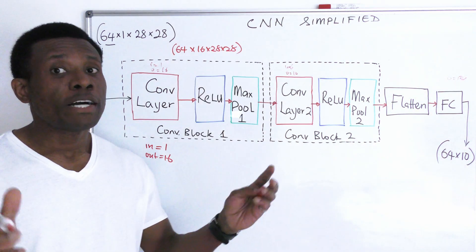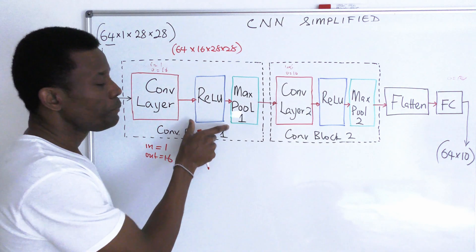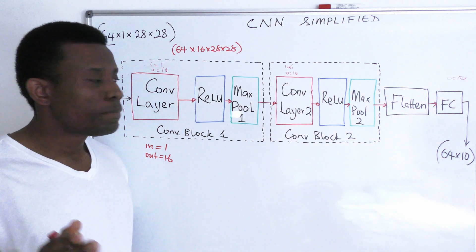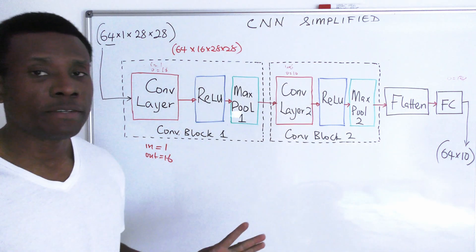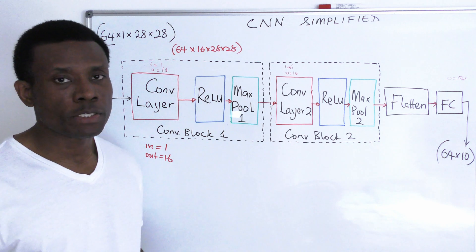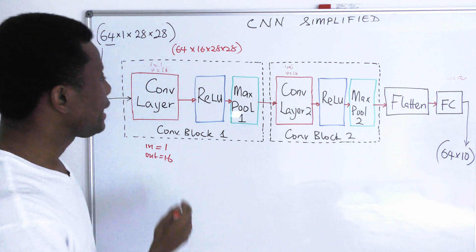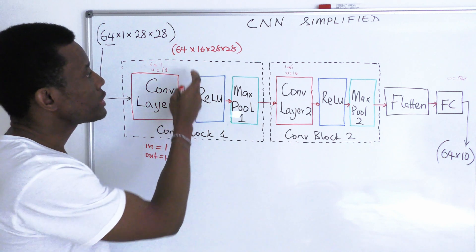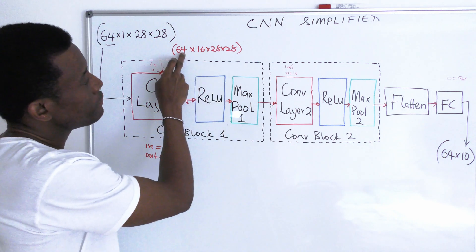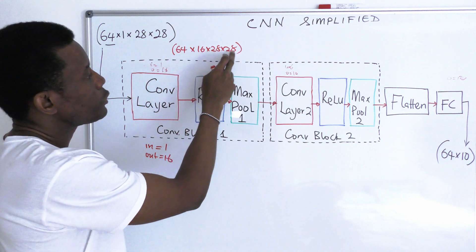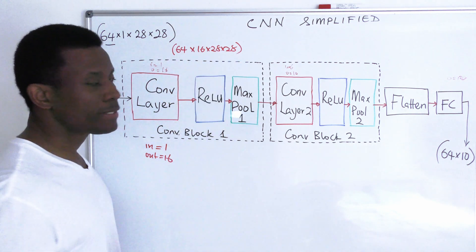Let's now go on to the second block, which is the ReLU. The ReLU block doesn't make any modification to the input dimension or to the image dimension. What goes into the ReLU block — 64 by 16 by 28 by 28 — comes out exactly the same.